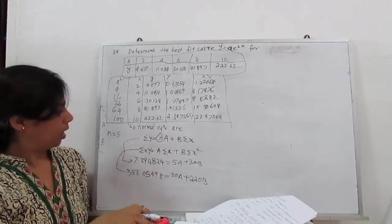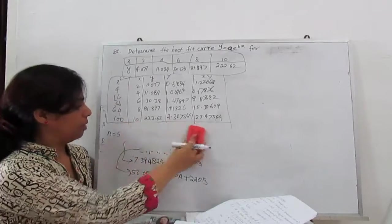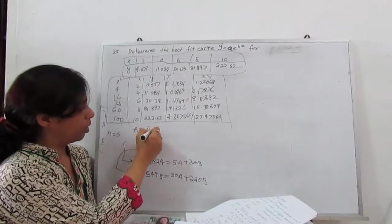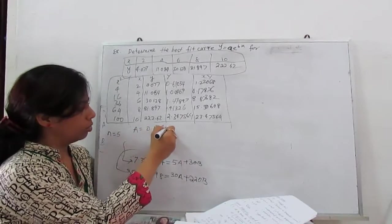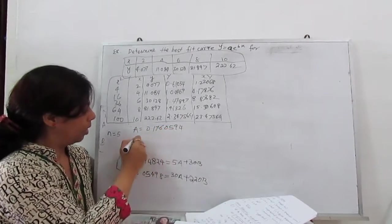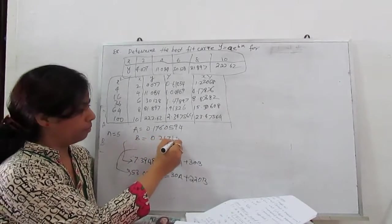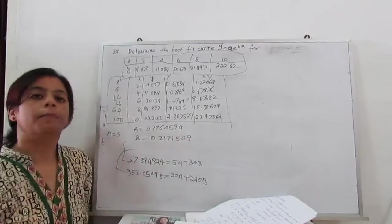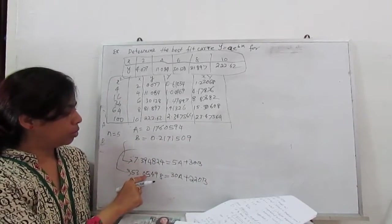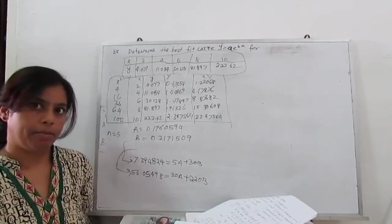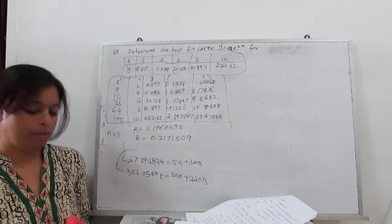So when you solve, what is our unknowns A and B? A is 0.1760594. B equals 0.2171509. So clear, from these 2 equations solving we can find the value of A and B. 2 equations, 2 unknowns. Solving very easy.